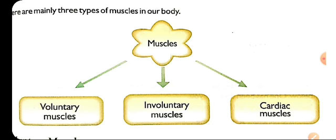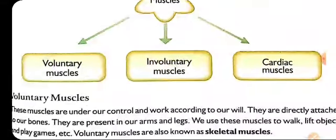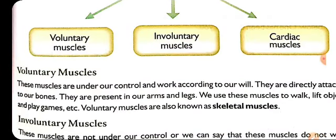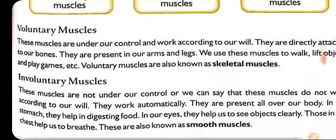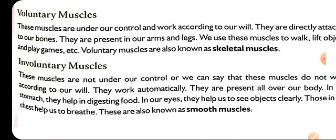What are voluntary muscles? They are the muscles which are in our control — they work according to our will. Like we want to lift our hand or we want to play games — in this case voluntary muscles help. Whereas involuntary muscles are not under our control; they keep on working by themselves. Like breathing — our chest movement is not under our control, so breathing is done by the involuntary muscles.